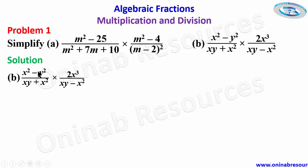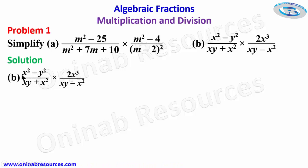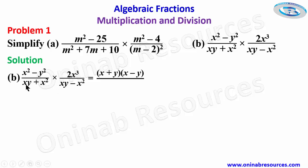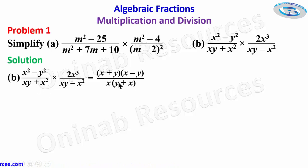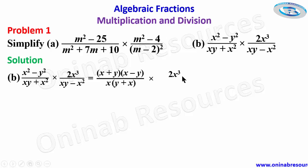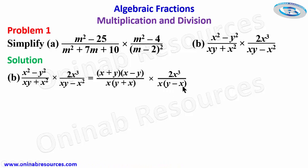We then go to part b. In the same way we factorize each of the expressions that form the fractions. For the first fraction, the numerator x squared minus y squared is a difference of two squares, giving x plus y into x minus y. For the denominator xy plus x squared, x is common, so x squared divided by x gives x, giving x into y plus x. Then times 2x cubed over xy minus x squared.